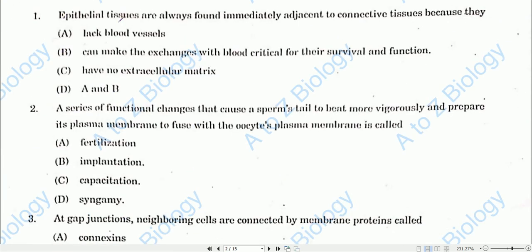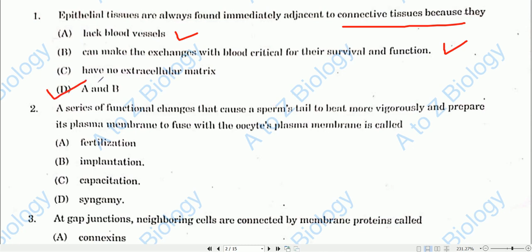Question number one: Epithelial tissues are always found immediately adjacent to connective tissue because — option A: lack of blood vessels, option B: it can make exchanges with blood critical for their survival and function. Both option A and option B are correct, so option D (both A and B) will be the correct answer.